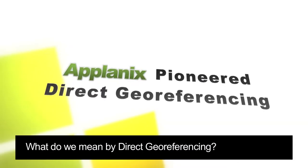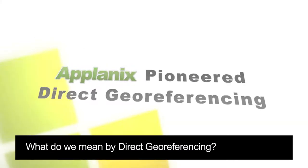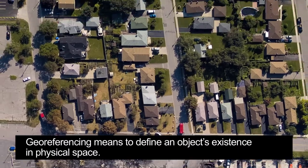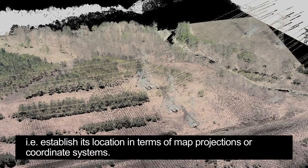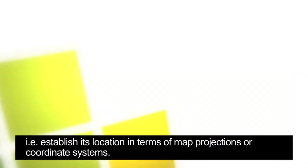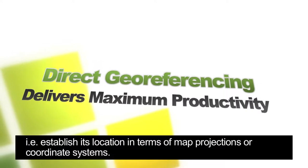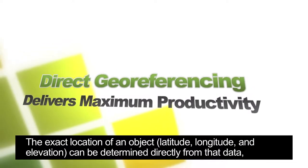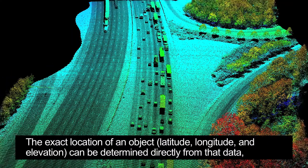What do we mean by direct georeferencing? Georeferencing means to define an object's existence in physical space, i.e., establish its location in terms of map projections or coordinate systems. The exact location of an object — latitude, longitude, and elevation —